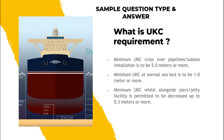Simple questions about UKC: what are the UKC requirements? Minimum UKC when crossing over a pipeline or subsea installation is to be 5 meters or more. Minimum UKC at normal seabed is to be 1.0 meter or more. Minimum UKC when alongside a pier or JT facility is permitted to decrease to 0.3 meters or more.